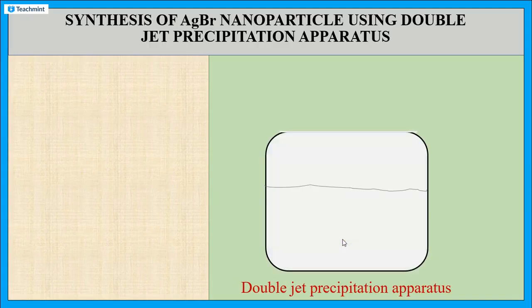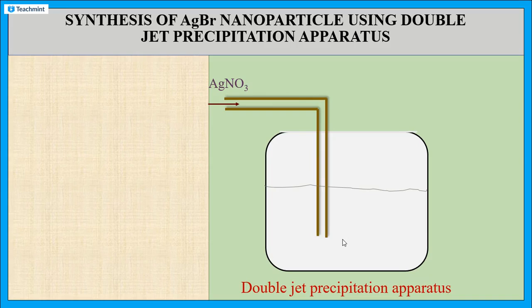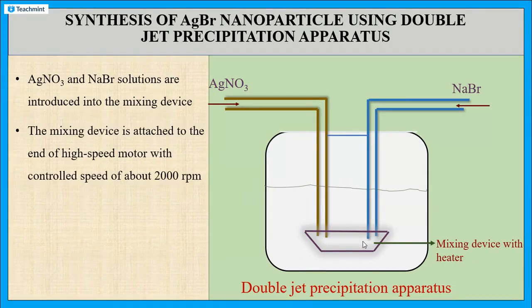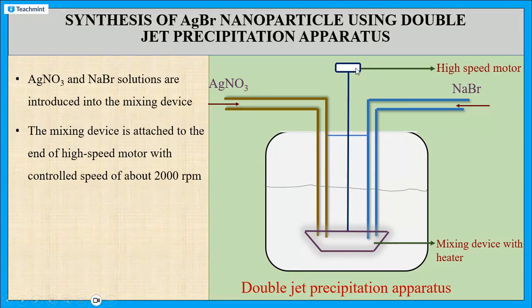In this apparatus, initially, the silver nitrate solution and the sodium bromide solutions are introduced into the mixing device. This mixing device already contains a heater. This is attached to the end of a high-speed motor. This high-speed motor has the speed of about 2000 revolutions per minute.